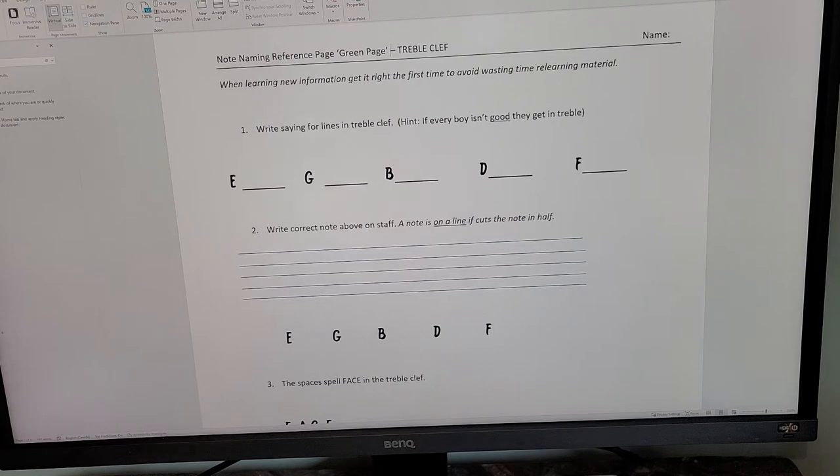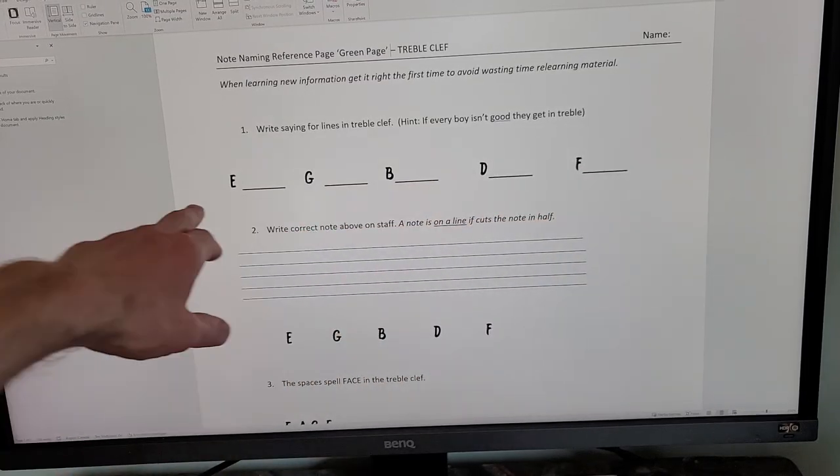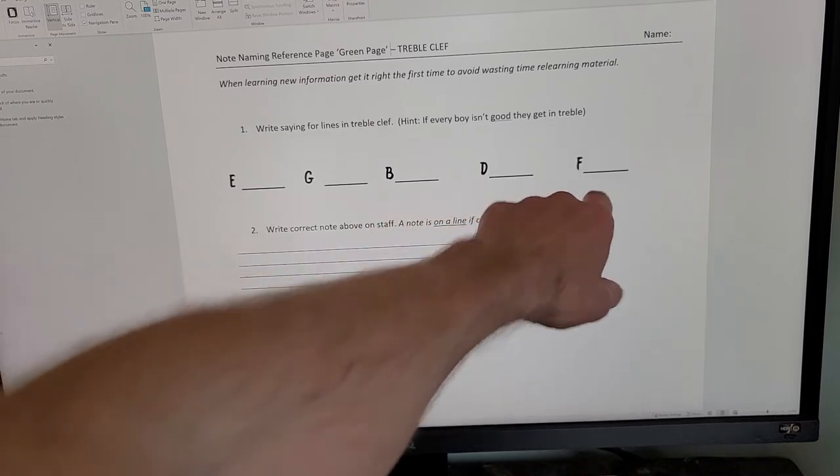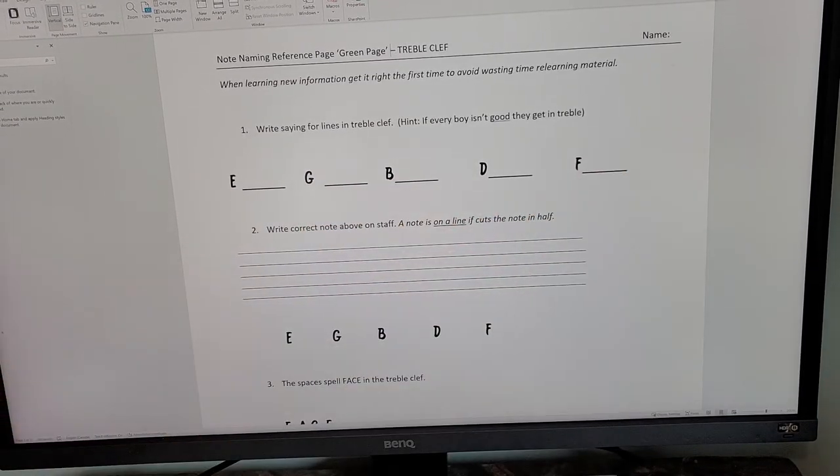And one of the things that apply are the names of the lines. So we have Every Good Boy Deserves Fudge. An acrostic to remember that. So E, G, B, D, F. Every Good Boy Deserves Fudge.